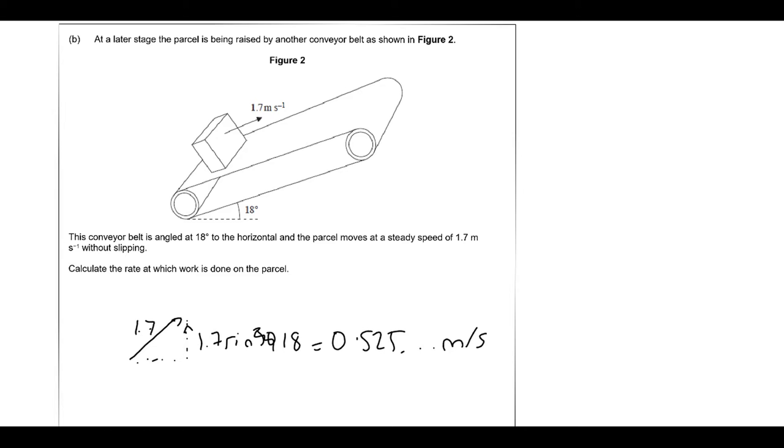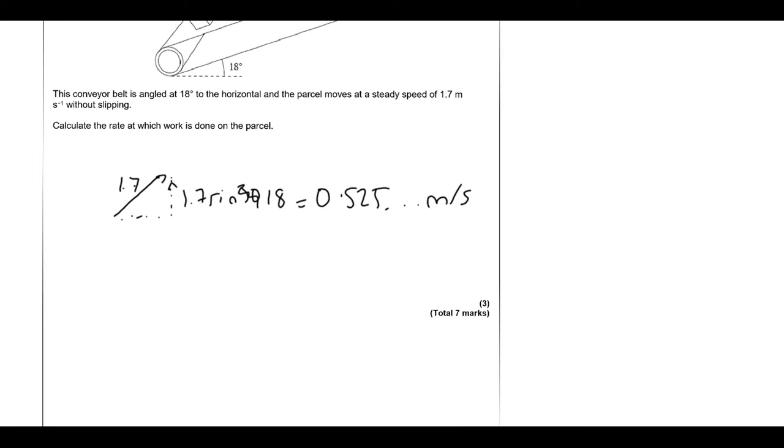So essentially what that tells you is it goes up by 0.525 meters every second. So this is now like that multiple choice question. So the work done per second, or the rate of work done, is going to be equal to the GPE per second. Which is going to be equal to the mass times gravitation times the height increase per second. So 15 times 9.81 times 0.525. So it's times that, times 15 times 9.81, which is 77 watts, because it's joules per second, which is the same as the unit of power or a watt there.